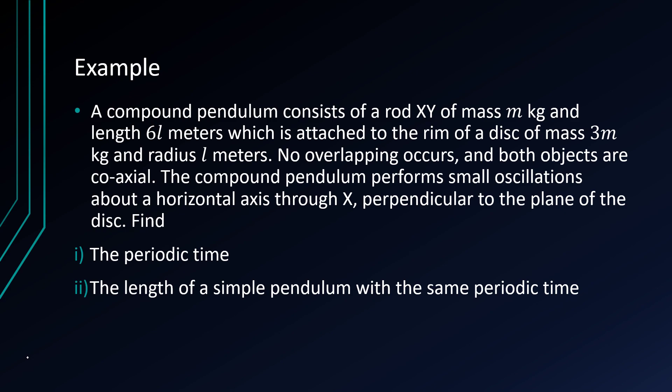No overlapping occurs and both objects are coaxial, so that just means that they're essentially like infinitely clean, they're essentially lamina, but we're just considering them to be as such. Obviously they're not going to be, they're going to have thickness, but everything that occurs is along one axis.